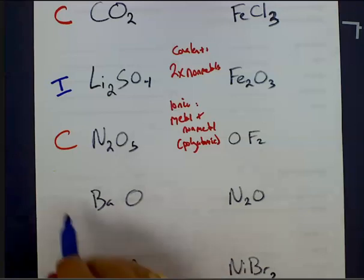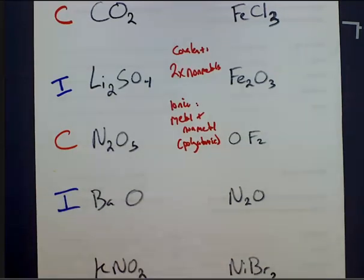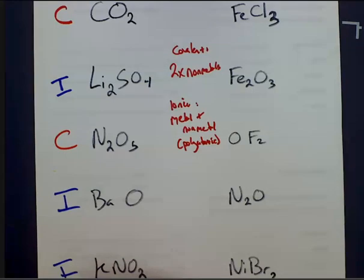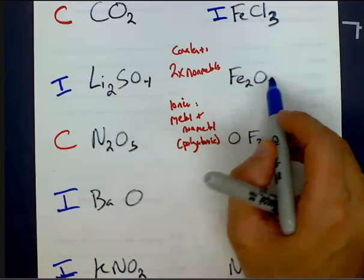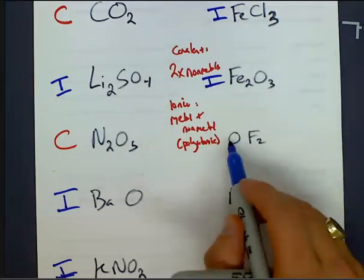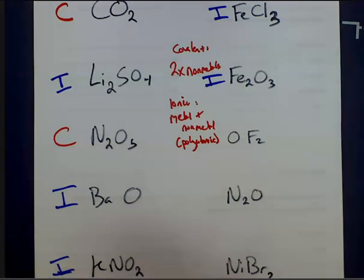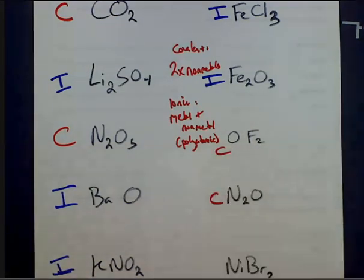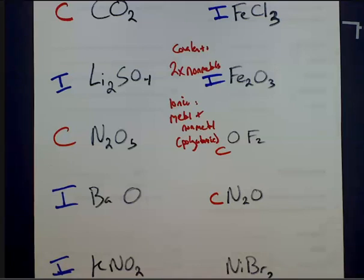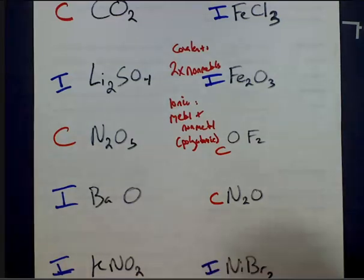BaO, it's a metal and a nonmetal, so that's ionic. KNO2, it's a metal and a polyatomic ion. FeCl3, it's ionic, because it's a metal and a nonmetal. Same here. OF2, those are both nonmetals, so that's a covalent compound. Same with N2O, it's a covalent compound. And then we've got here NiBr2, it's ionic.